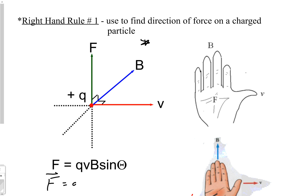In calculus-based physics you'd write it a specific way, and it actually makes the problems easier. What happens is you've got a velocity vector and a magnetic field vector that are at right angles to each other, and the result is a force exerted at 90 degrees to both of those vectors — that is the magnetic force being exerted.